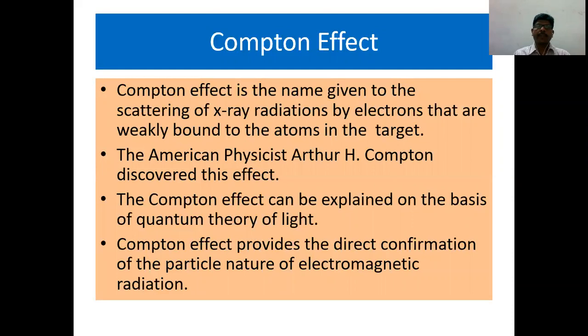Compton effect is the name given for scattering of x-ray radiations by the electrons that are weakly bound to the atoms in the target. At this stage we should remember that the target, it is graphite in this case, contains electrons that are tightly bound to the atom and also some electrons that are free or called as weakly bound to the atom.